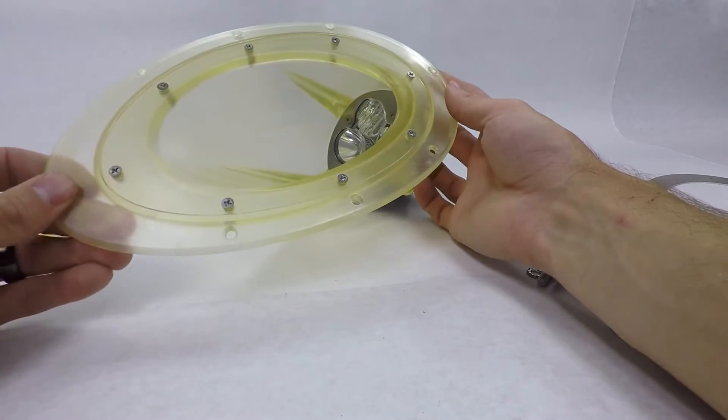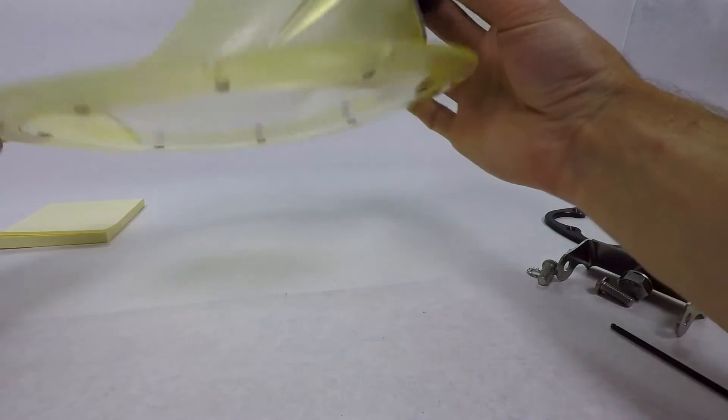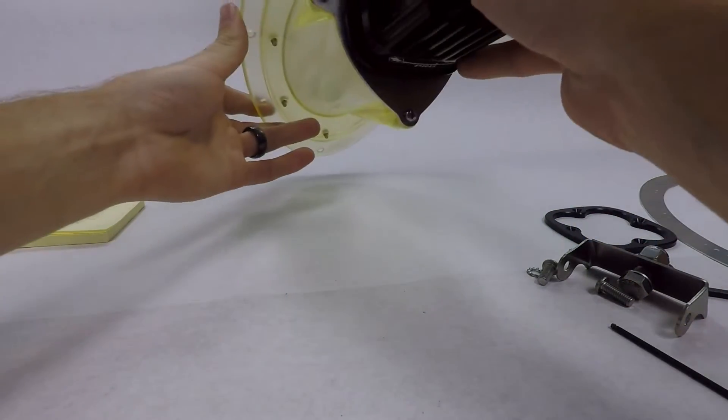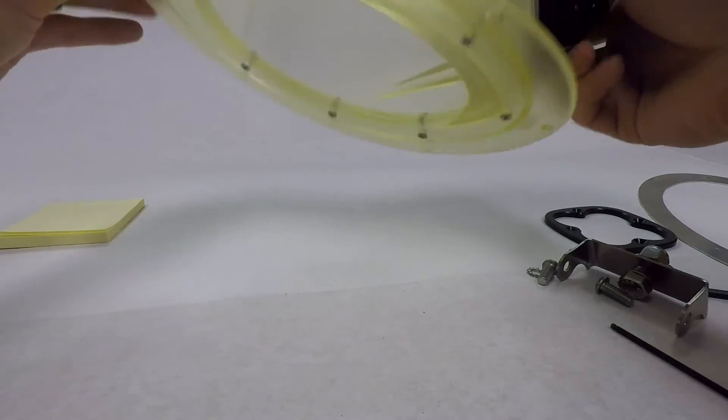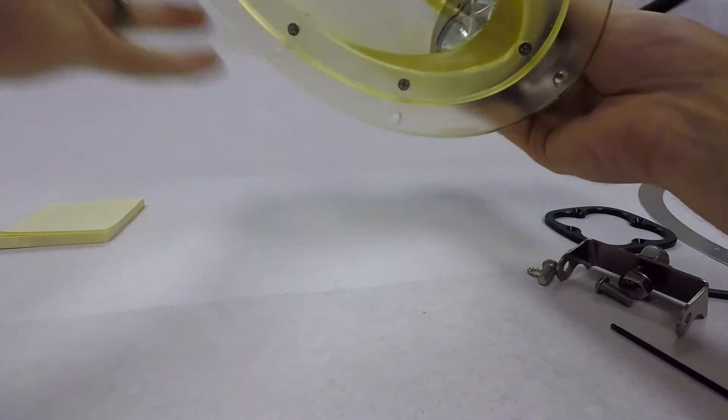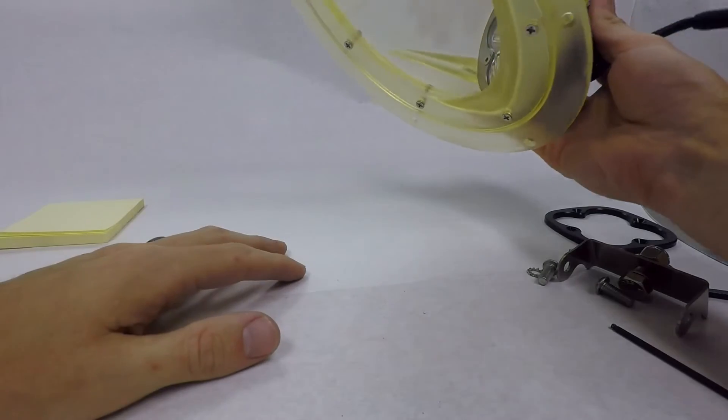And that is pretty much that. Light in the housing through your bezel, bezel connected through your urethane. Lens on. At this point you'd be ready to install through your cowling.